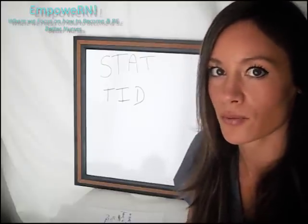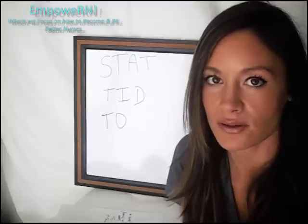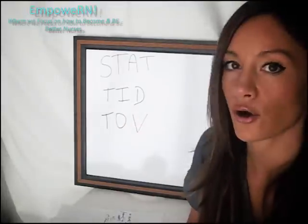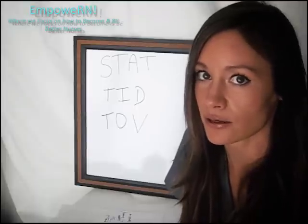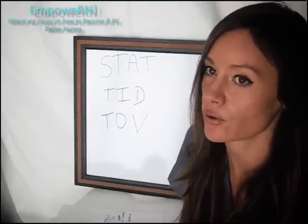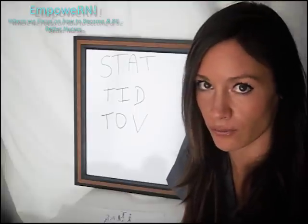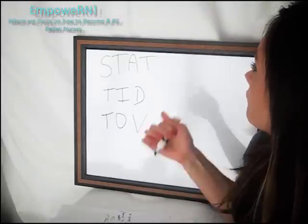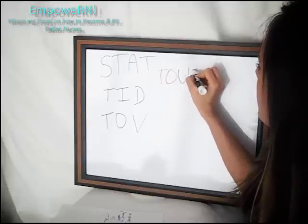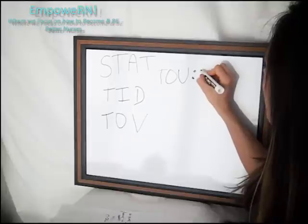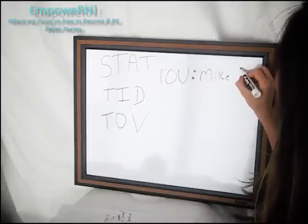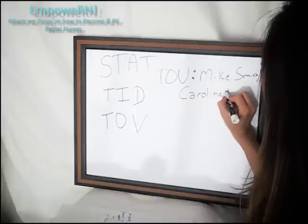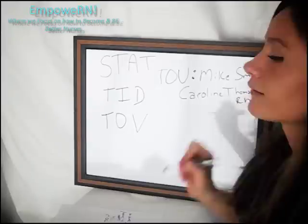TID is three times daily — another one you just have to remember. TO is telephone order, which we use a lot. I also add a V to make TOV — telephone order verified. So if I'm taking an order from a physician and writing or entering it into the computer, I'm saying I received the order and verified it was correct. I'll write 'ordered TOV' and then put the doctor's name — for example, Mike Smith — with a slash and my name followed by RN.